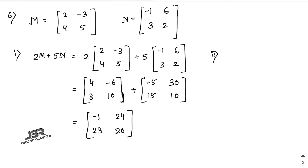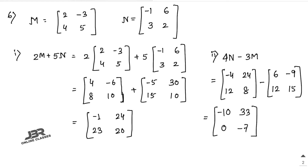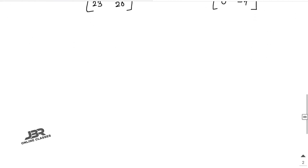Number 2: find 4N - 3M. 4 multiplied with N: [-4, 24, 12, 8]. 3 multiplied with M: [6, -9, 12, 15]. Now subtract: -4-6=-10, 24-(-9)=33, 12-12=0, 8-15=-7. That is your answer.